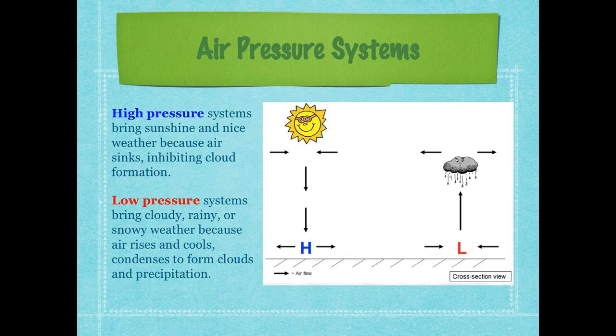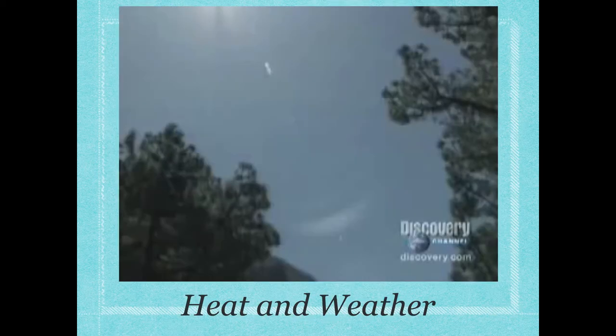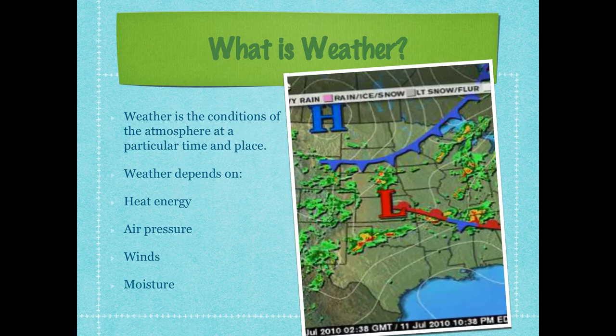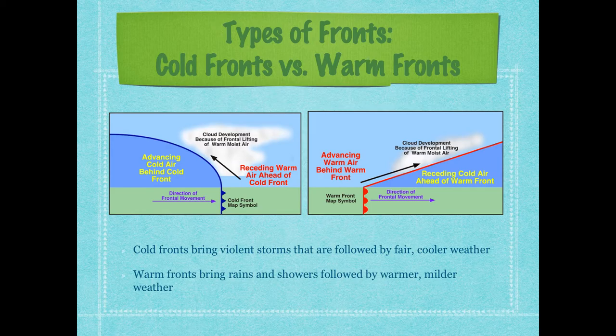If you want to get rained on or snowed on, you need cloud buildup — so low pressure allows for that. Low pressure systems bring rainy, cold, cloudy weather because the air rises and cools and condenses to form clouds and precipitation. High pressure brings clear skies; low pressure brings clouds and precipitation. On the weather map, where the H is there aren't many clouds, and around the L there are lots of clouds — a great example of the difference.